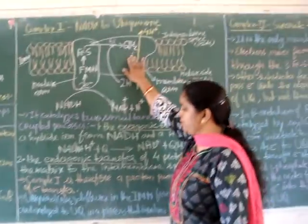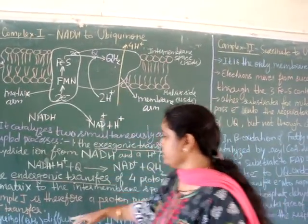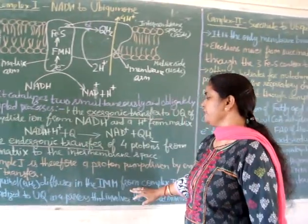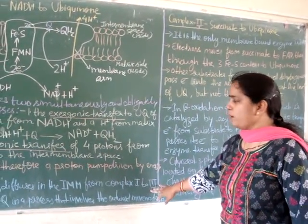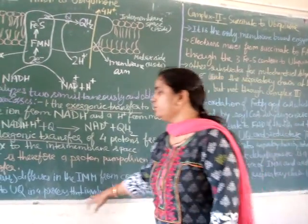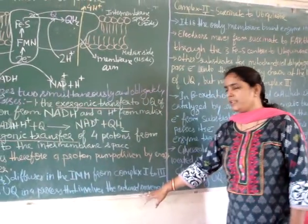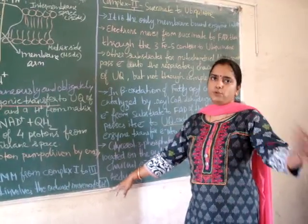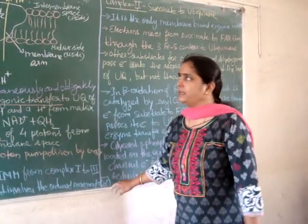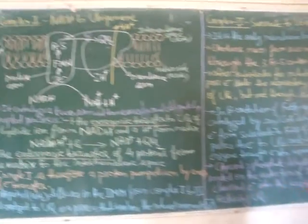The ubiquinol that is reduced upon electron acceptance now diffuses within the inner mitochondrial membrane from Complex I toward Complex II and III, and is oxidized in a process involving the outward movement of protons. This concludes the transfer of electrons through Complex I.